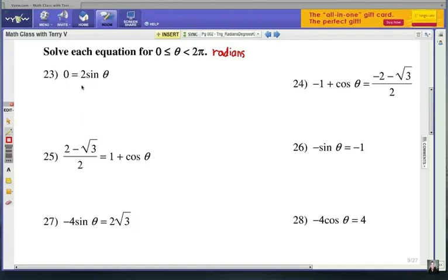In number 23, we have to get sine theta by itself. Obviously, that means we're going to have to divide by 2. 0 divided by 2, of course, is still 0, so sine theta has to be 0.